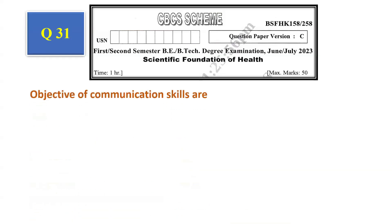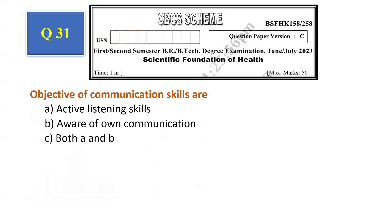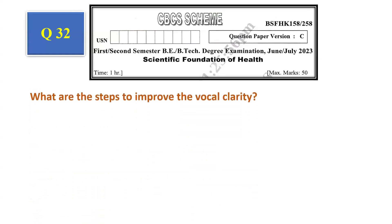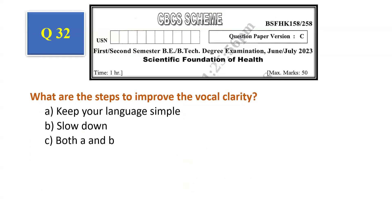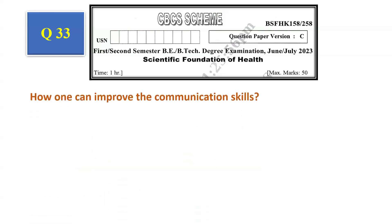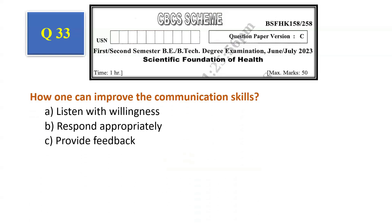Question number 31: Objectives of communication skills are — active listening skills, aware of own communication, both A and B, none of the above. The answer is both A and B, that is option C. Question number 32: What are the steps to improve vocal clarity? Keep your language simple, slow down, both A and B, feedback. The answer is both A and B, that is option C. Question number 33: How can one improve communication skills? Listen with willingness, respond appropriately, provide feedback, all of the above. The answer is all of the above, that is option D.